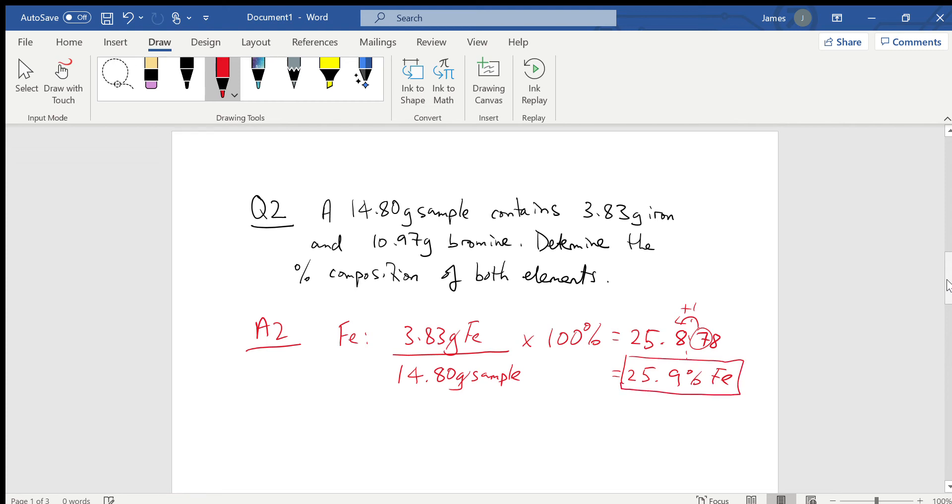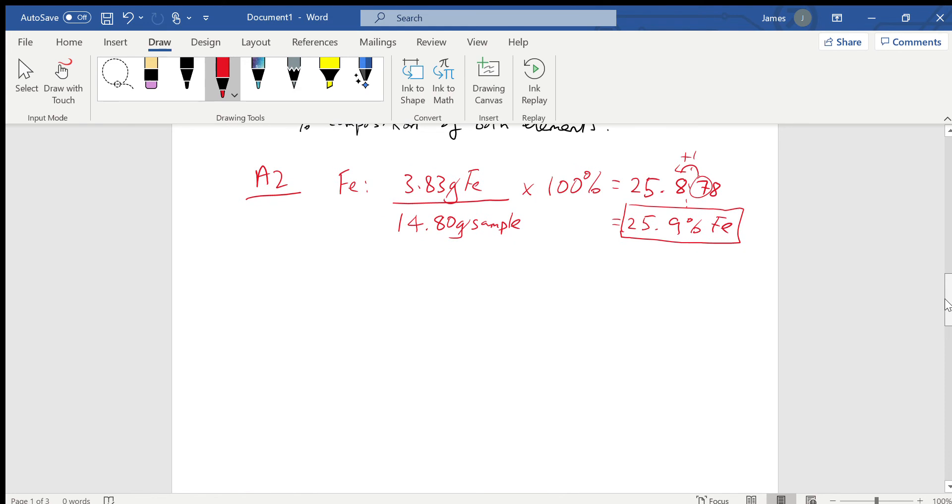Then we just do the same for bromine. A slightly different presentation in this question, but no fundamental changes. 10.97 grams of bromine divided by 14.8 gram sample as a percentage. We get 74.12, add a couple of extra digits from your calculator. This one doesn't do anything other than add a zero to the previous number, so we get 74.12 percent bromine.